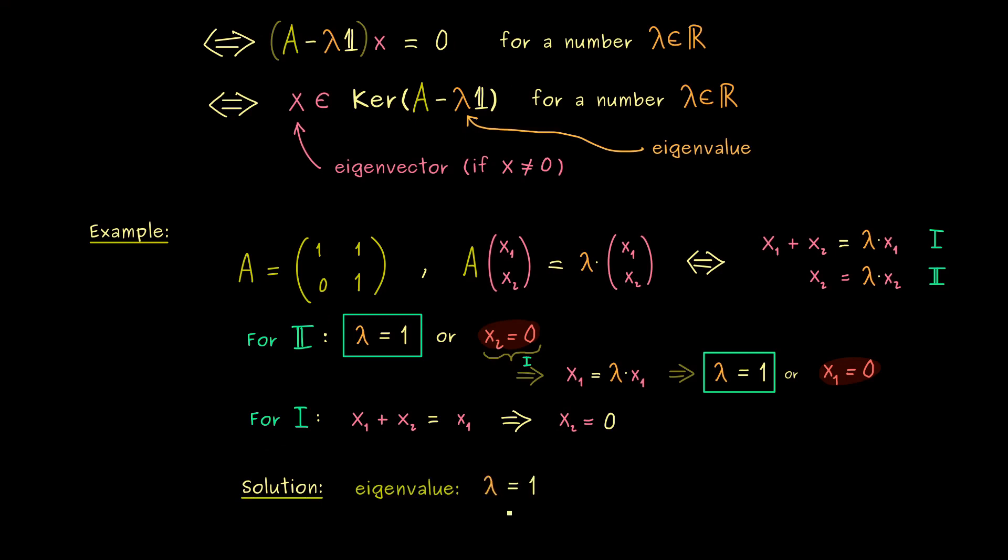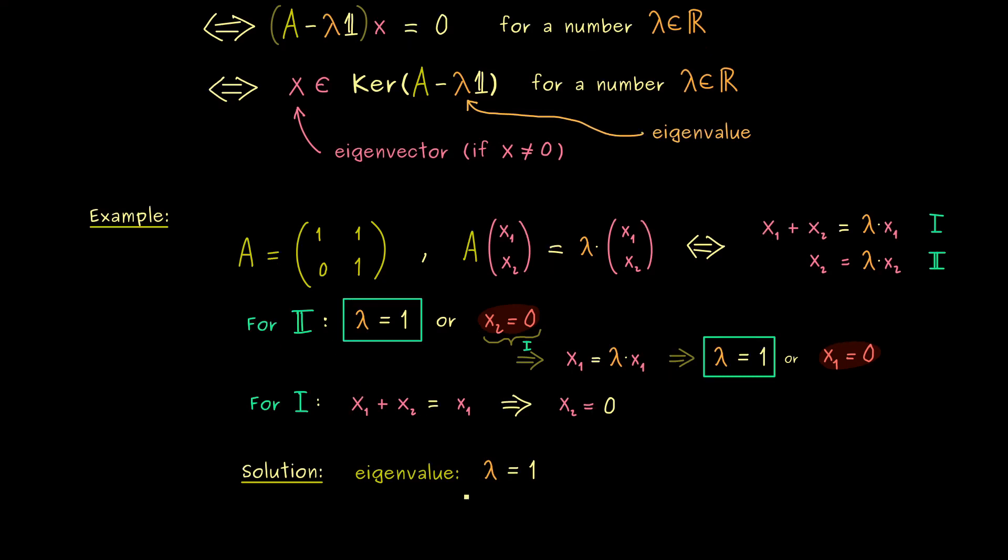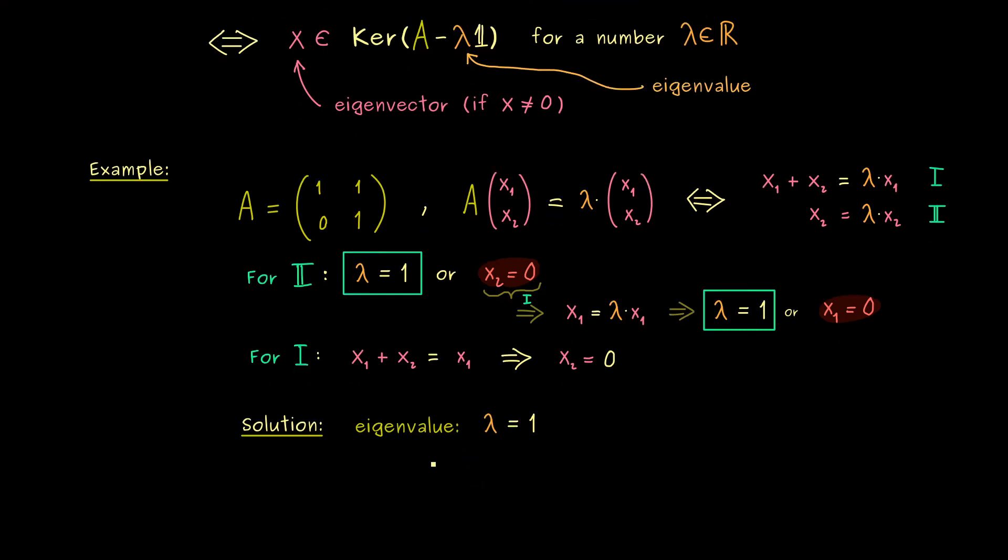First, we have proven that this matrix A only has one eigenvalue, and this one is given by the scaling factor 1. Moreover, the corresponding eigenvectors can be written as (x₁, 0). And there, x₁ can be any real number but not 0. So again, you know, we always have to exclude the 0 vector from the eigenvectors.